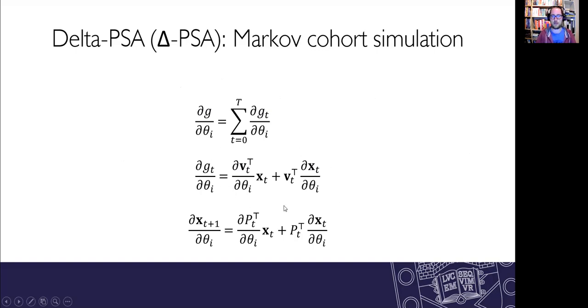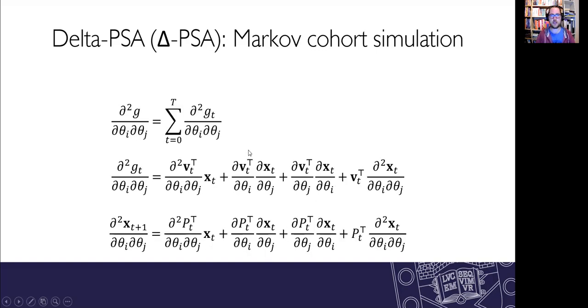And the same thing happens with the Markov recurrence relation. We can take the partial derivative of that equation on both sides and we can take those partial derivatives again to get the second differentials and get those Hessian matrices that we wanted.